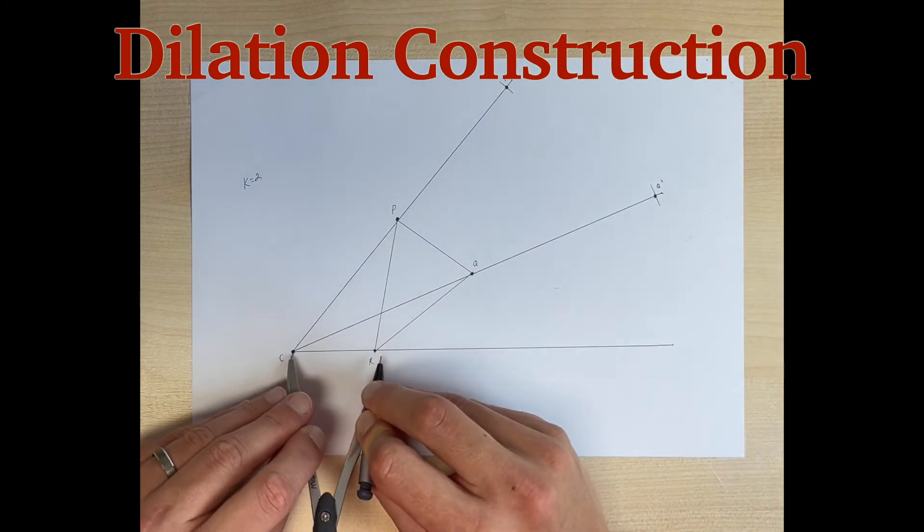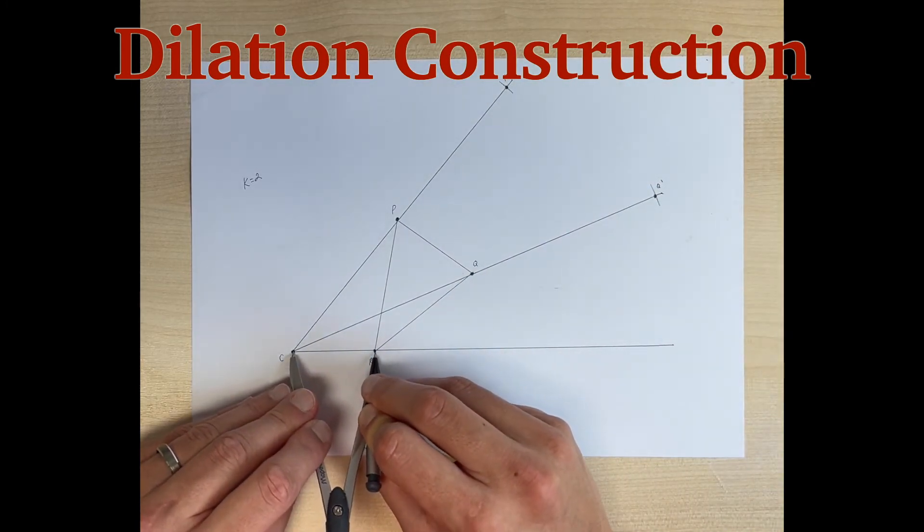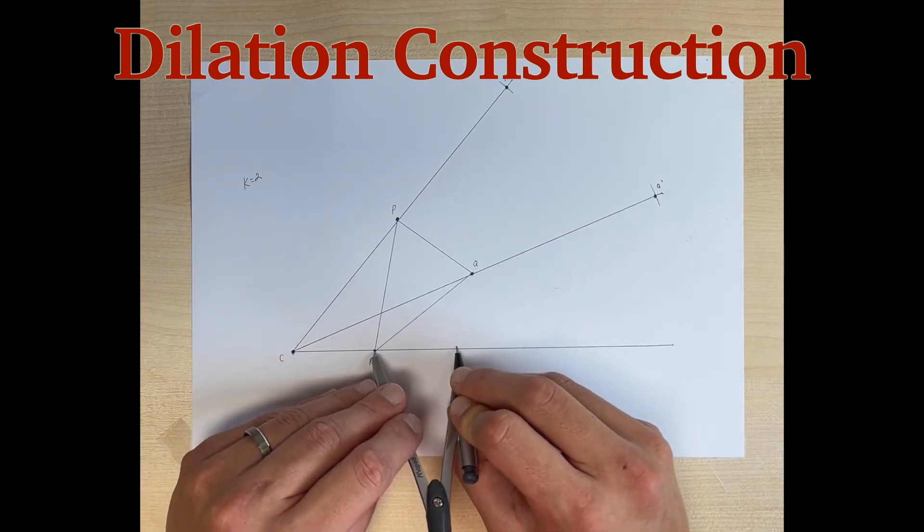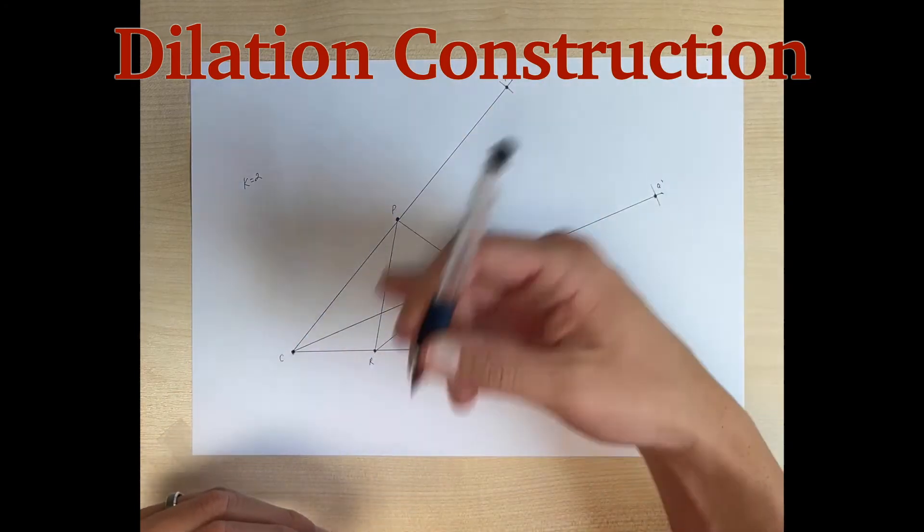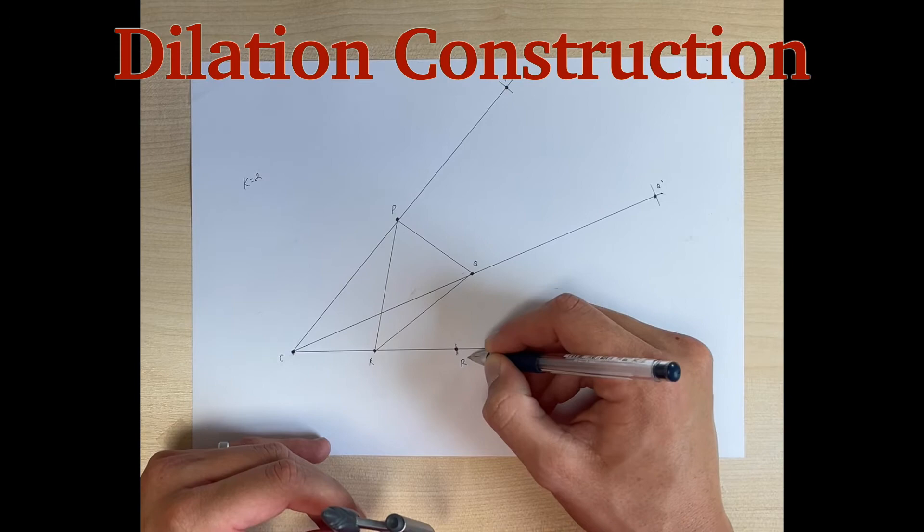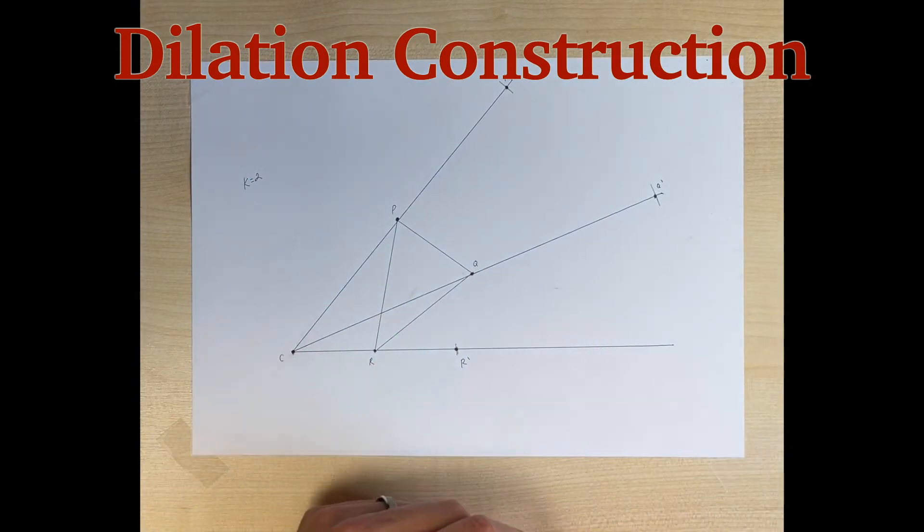Lastly, we're going to measure the distance from C to R. We're going to bring that out here, needle at R, and we make our arc right there. We put our vertex right here and call this R prime.